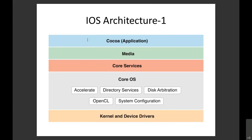Below the media layer is the Core Services layer, which is the foundation on which the above layers are built. It consists of libraries like OpenCL, system configurations, disk distributions, directory services, StoreKit, and Foundation framework. Below that is the kernel and device drivers. Apple only allows Apple devices to connect to iPhone or MacBook, so device driver support exists only for Apple hardware — it's a closed environment.